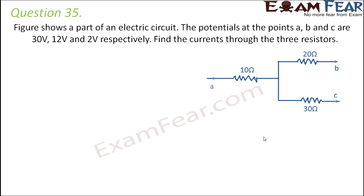Question number 35. The figure shows a part of an electric circuit. The potentials at points A, B and C are 30 volts, 12 volts and 2 volts respectively. Find the current through the three resistors. The potentials at each point are given and we have to find the current flowing through each resistor. Let us mark a junction point P.